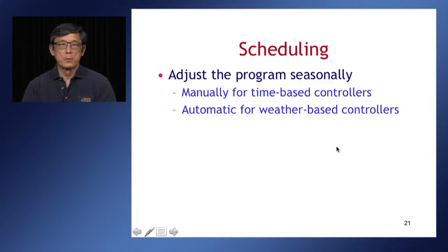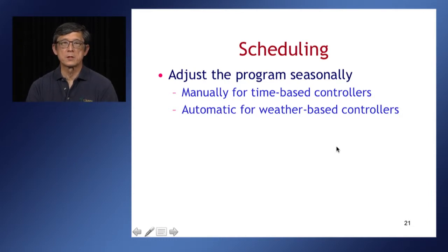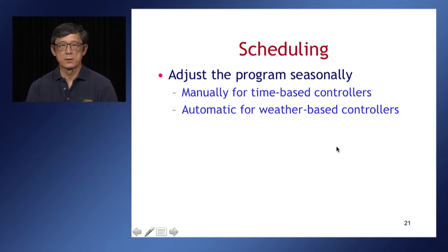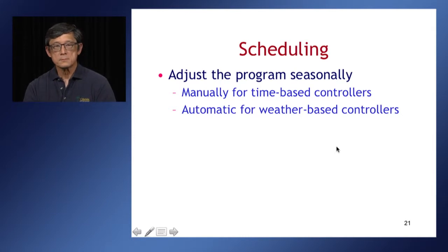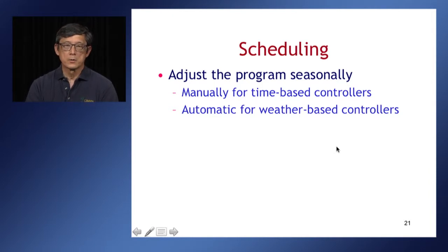When we adjust programs seasonally, if we have a time-based controller, we have to do that manually — physically visit the controller and make adjustments for the difference in water demand. If we have an automatic weather-based controller, that's done by the controller, and we'll talk about how that's done a little later.